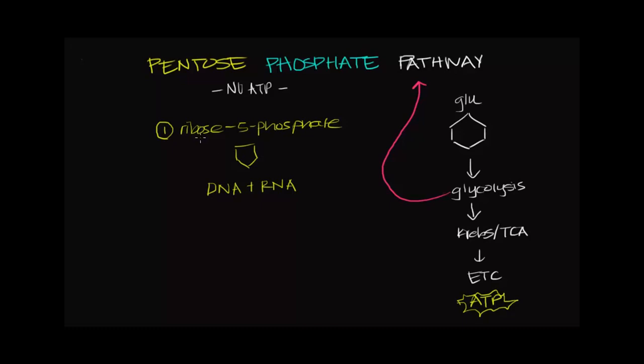And in RNA, it's just ribose. But in either case, this ribose 5-phosphate is an important precursor to creating DNA and RNA. So quite a crucial molecule.